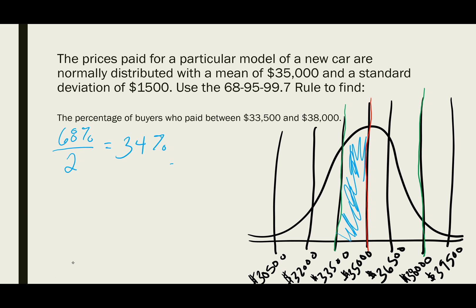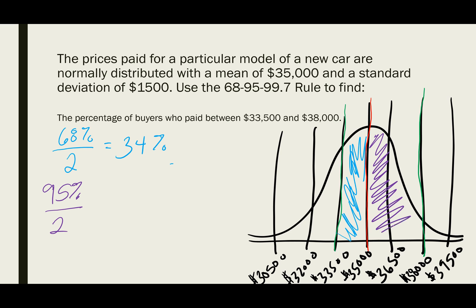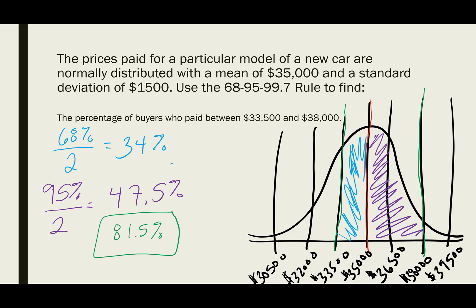Now let's deal with the other side, which is plus two standard deviations. We know that plus or minus two standard deviations covers 95%, but we only want the half above the mean. Because the normal distribution is symmetric, we divide 95% by two, giving us 47.5%. So 47.5% of the data is between the mean and $38,000. Adding 34% plus 47.5% gives us 81.5%. So 81.5% of buyers paid between $33,500 and $38,000.